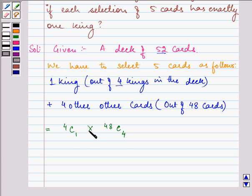On applying the multiplication principle, we have 4 factorial divided by 1 factorial times 3 factorial, multiplied by 48 factorial divided by 4 factorial times 44 factorial.